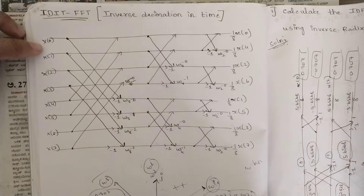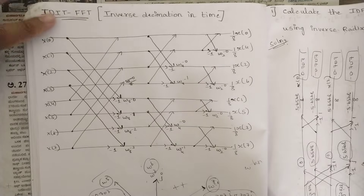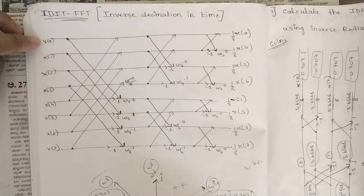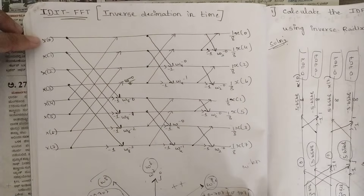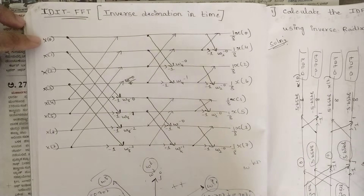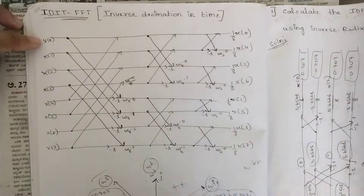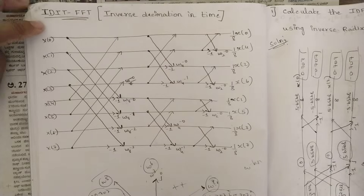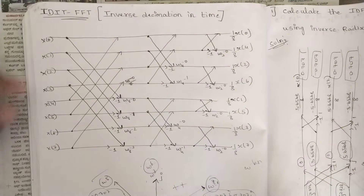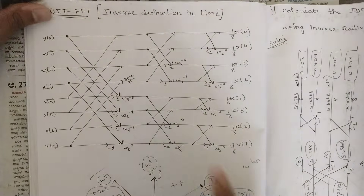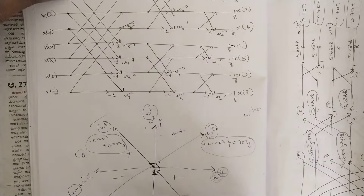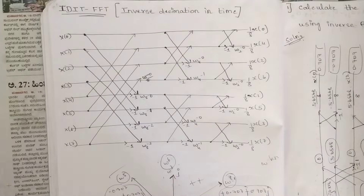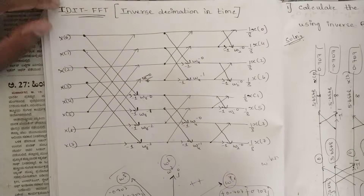Let us start with the IDIT FFT concept — inverse decimation in time. In the last session we discussed an eight-point DFT, and keeping that in mind I have drawn a structure for the eight-point IDFT here. I am going to explain the changes, the structure, and the signal flow graph, which I already explained in the last session. So here in IDFT...